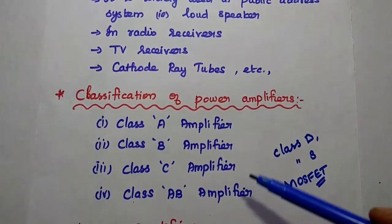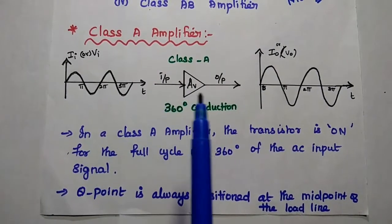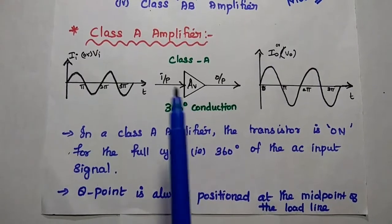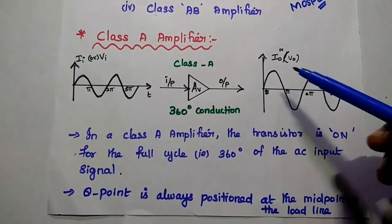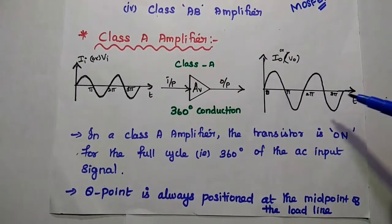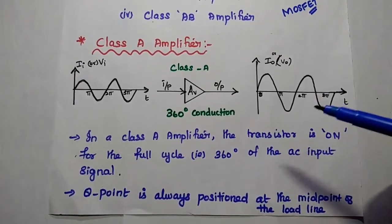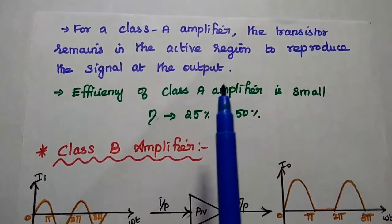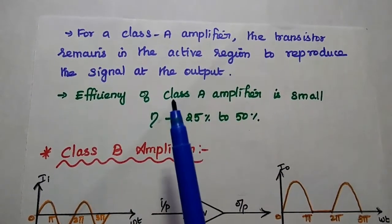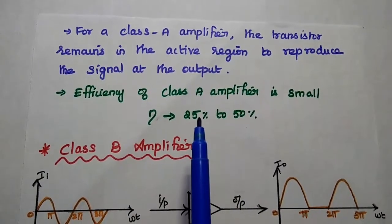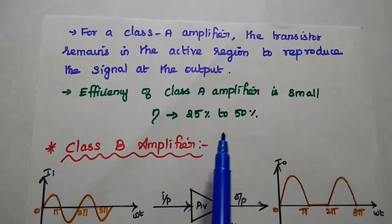Now we are going to compare these four amplifiers. Let's start with the class A amplifier. In this amplifier, the transistor is in the active region for the full cycle of the AC input signal. The output signal is produced for the full 360 degrees of the AC input signal, so it can reproduce the signal at the output. The operating point or Q point is positioned at the midpoint of the load line. The efficiency of a class A amplifier is very small, that is 25% to 50%.